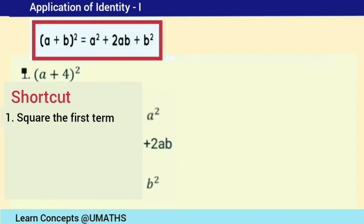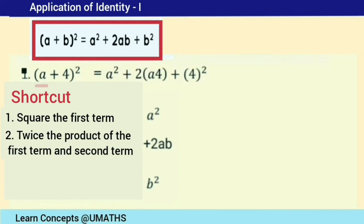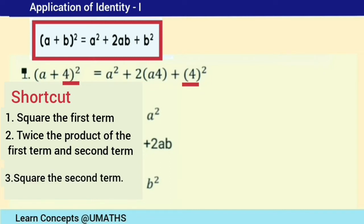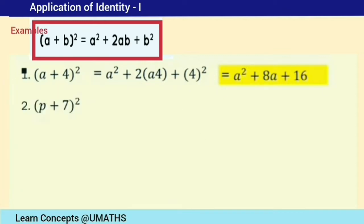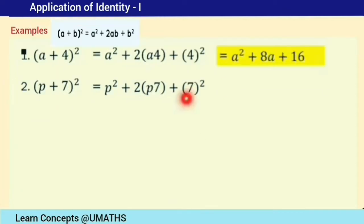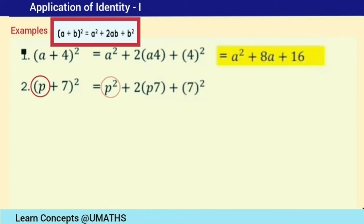First, square the first term: a squared. Then take twice the product of the first and last term — here a and 4 — giving 2a×4 = 8a. Then square the second term: 4 squared = 16. So we get a squared plus 8a plus 16. Similarly, for p plus 7 whole square: p squared, plus 2 times p times 7 which is 14p, plus 7 squared.